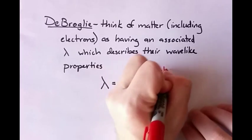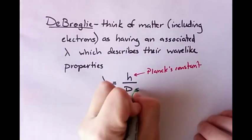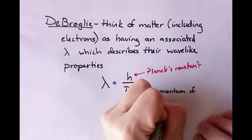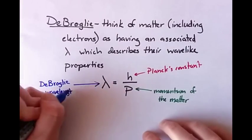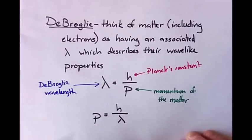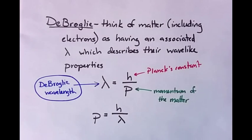H is Planck's constant. P is the momentum of that thing, that electron, or whatever other piece of matter we're talking about. And you can rearrange that, of course, and write it as P equals h over lambda, if you want to. Lambda is known as the de Broglie wavelength.